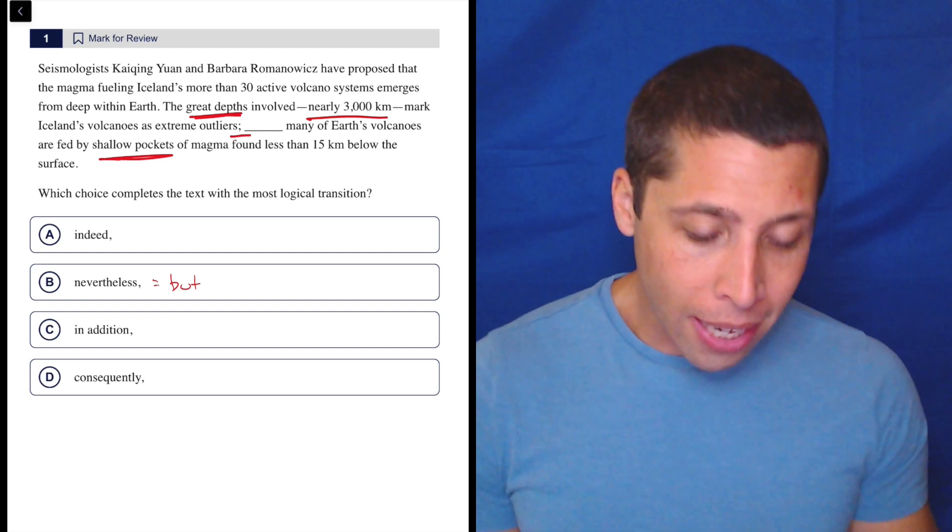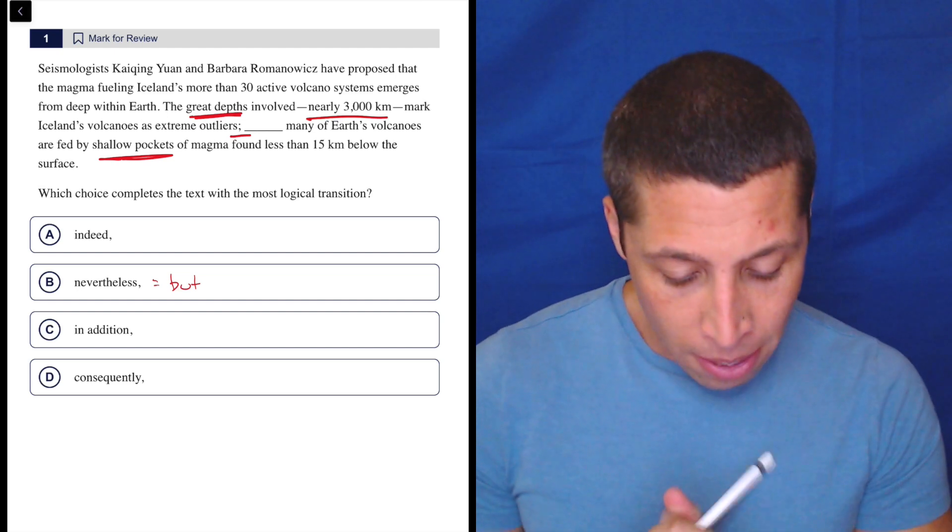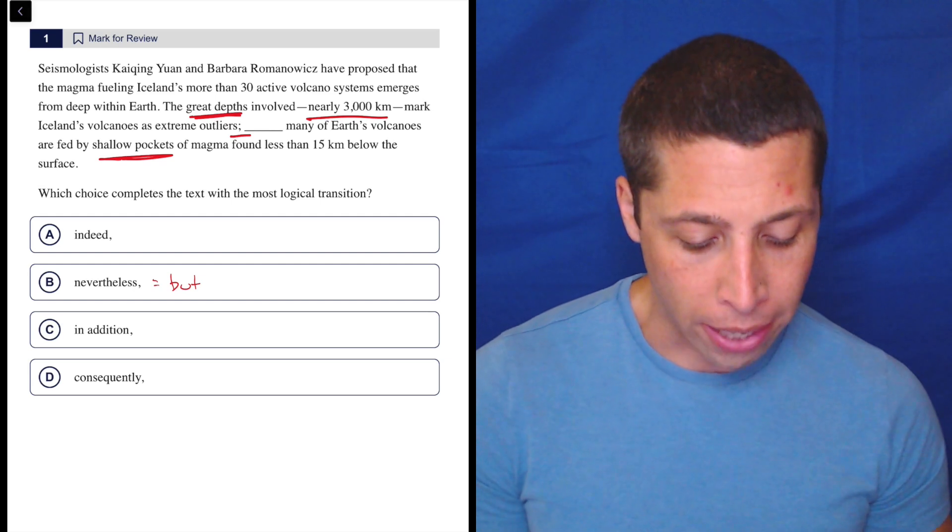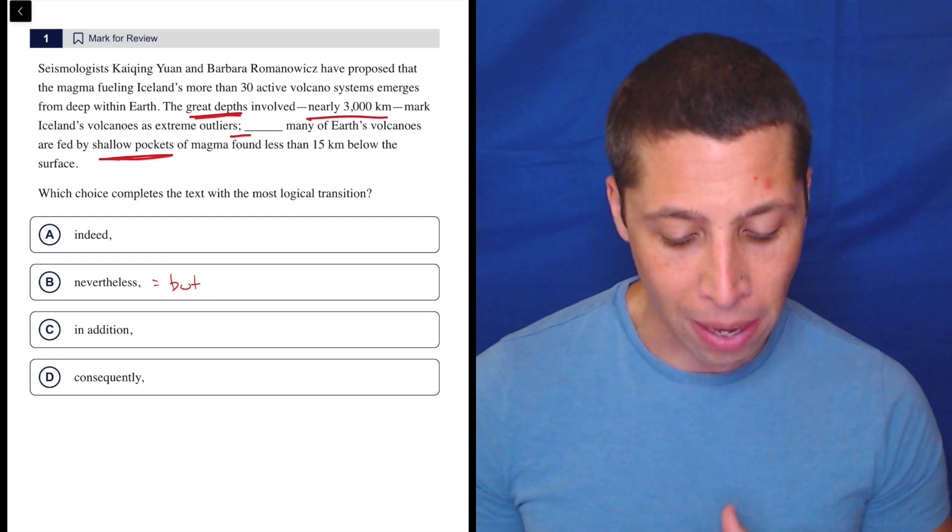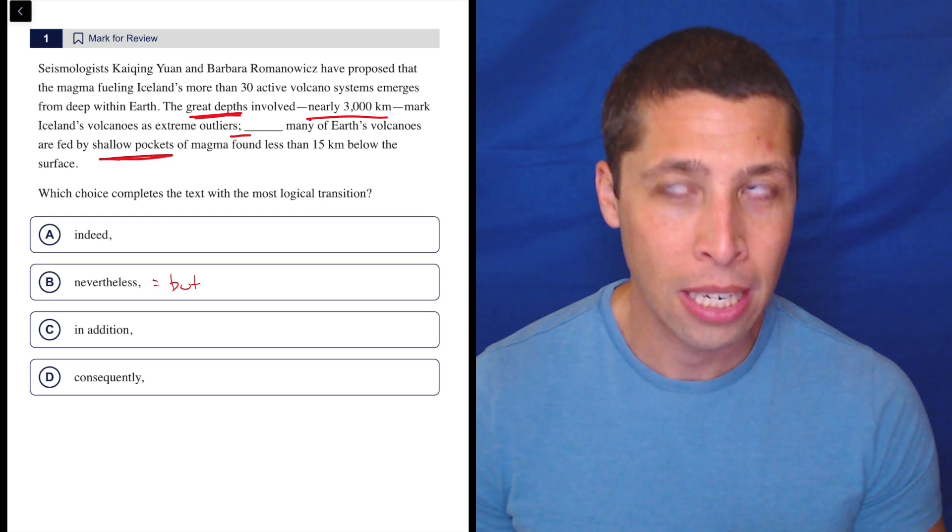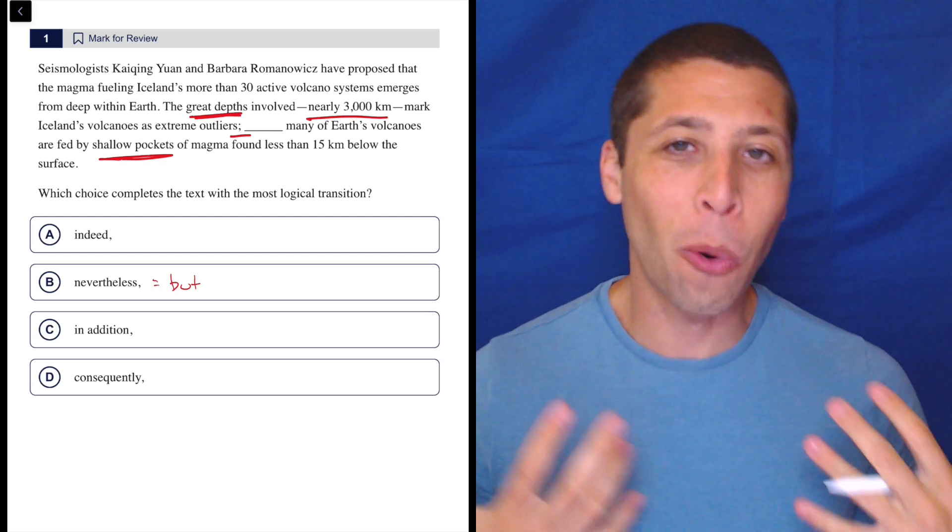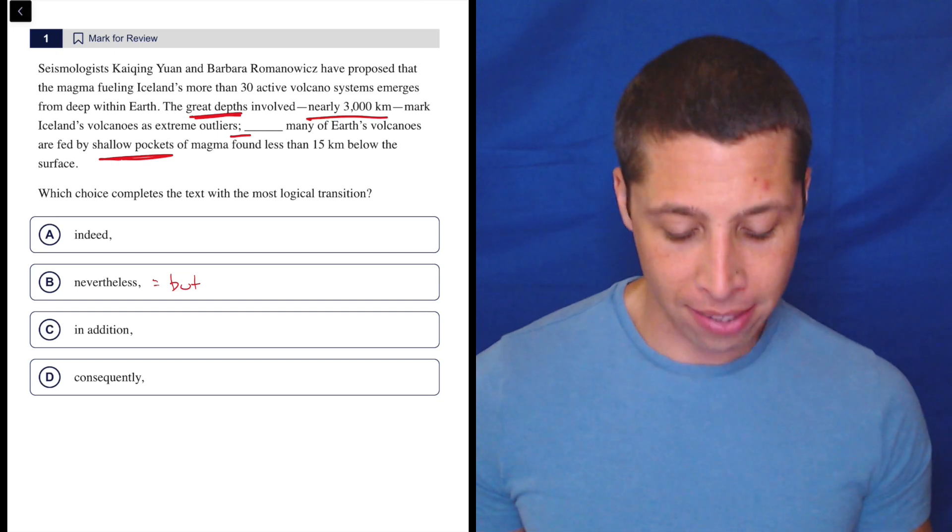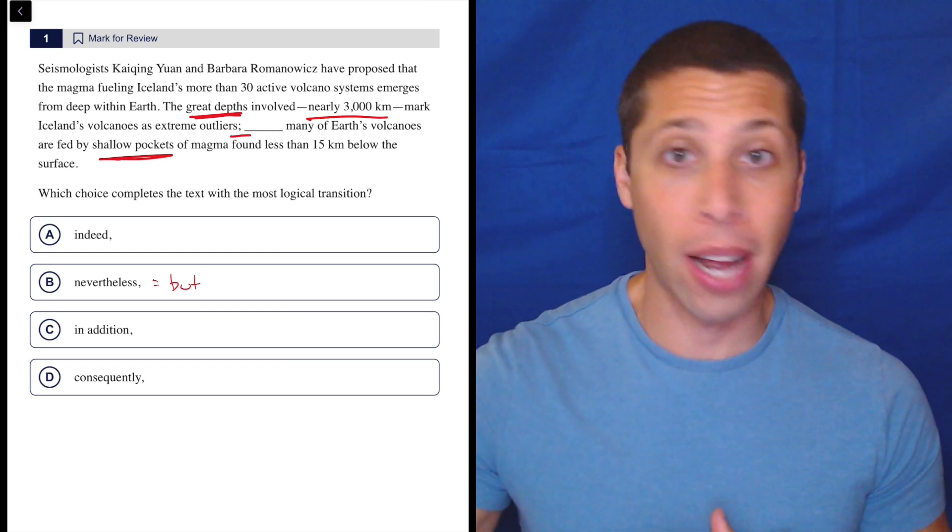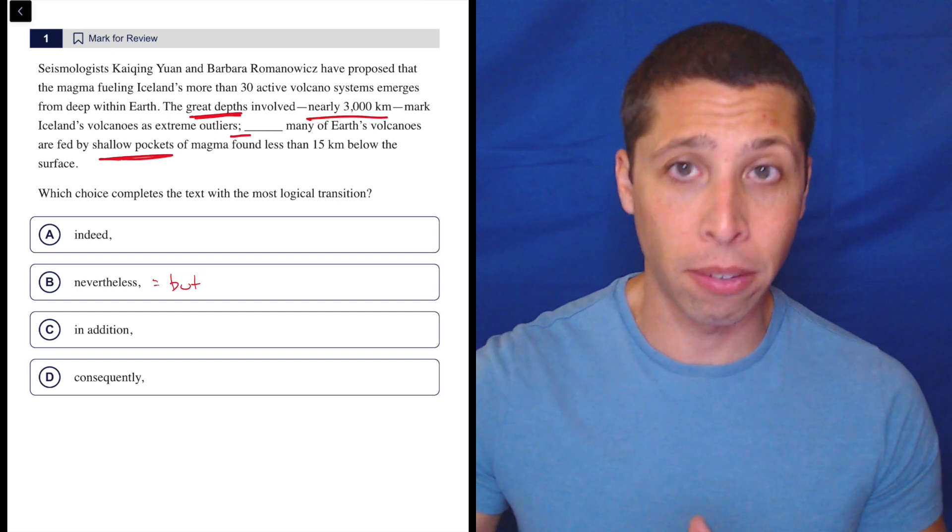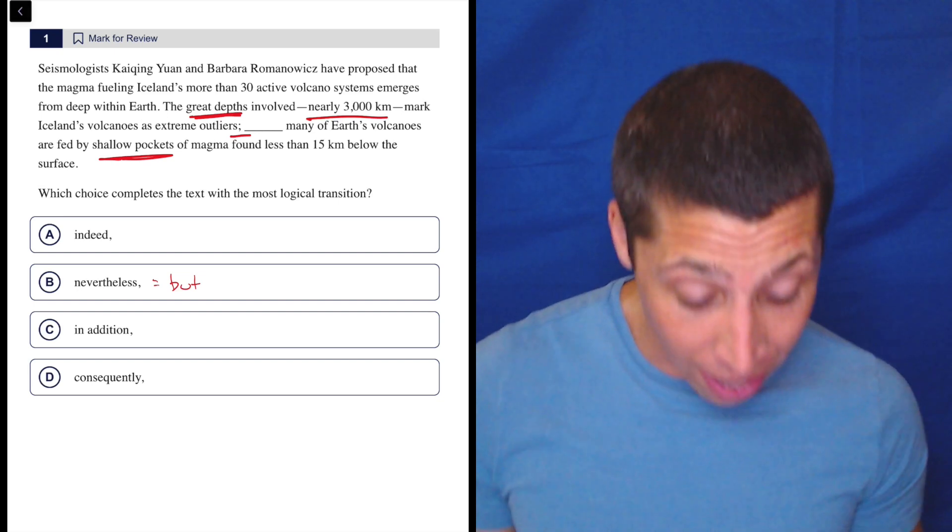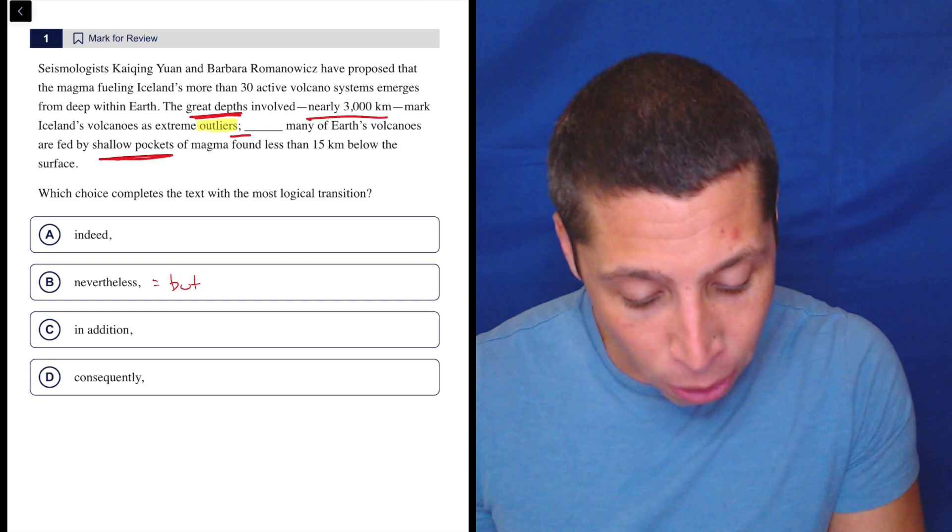But let's take a look. We put that in. Does it really make sense? The great depths involved mark Iceland's volcanoes as extreme outliers, but many of Earth's volcanoes are fed by shallow pockets of magma found less than 15 kilometers below the surface. It's not quite the right kind of contrast. Nevertheless here would almost be like dismissing this thing about Iceland. It's basically saying it's irrelevant.